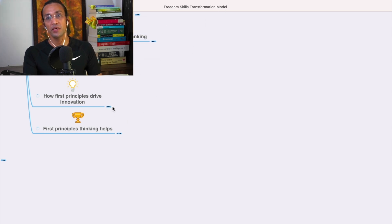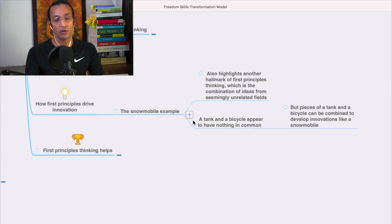How do first principles drive innovation? The snowmobile example highlights another mark of first principles thinking, which is the combination of ideas from seemingly unrelated fields. A tank and a bicycle appear to have nothing in common, but pieces of a tank and a bicycle can combine to develop innovation like a snowmobile. This is how you apply first principles thinking and critical thinking to solve big problems.